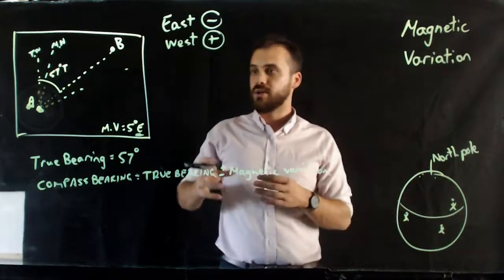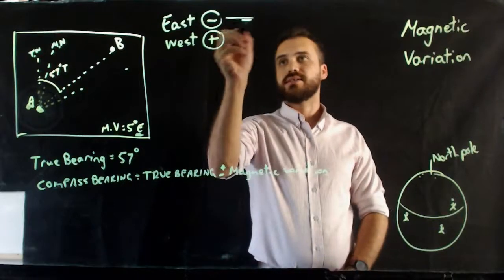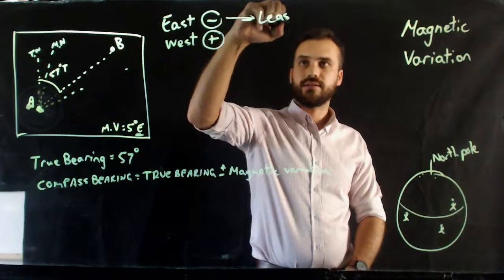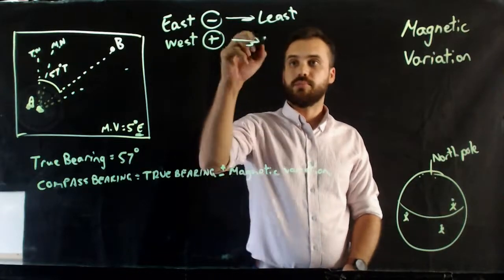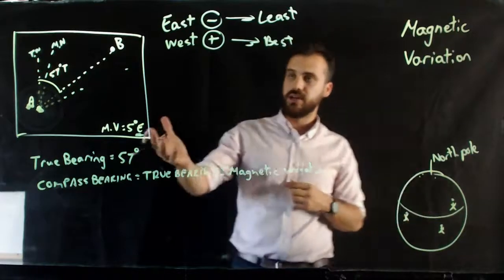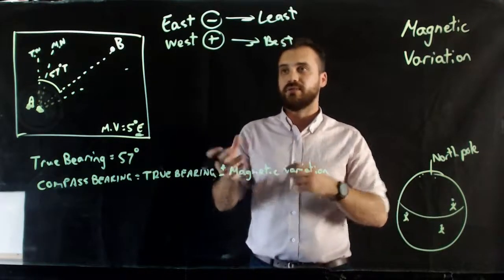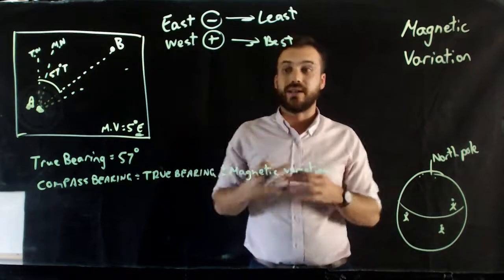So the way that people remember this is they say east equals least, as in minus, and west equals best, as in plus. So if the magnetic variation is east, you subtract it. If the magnetic variation is west, you add it.